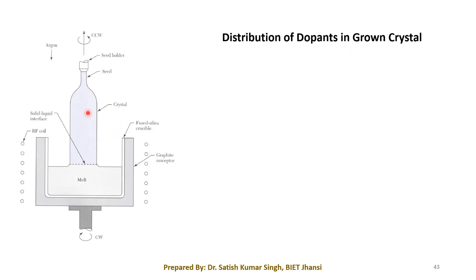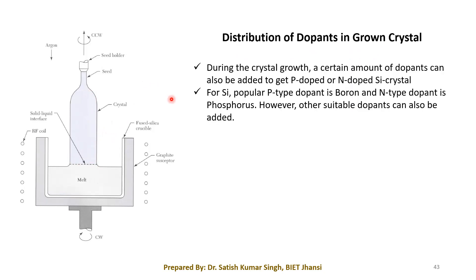There are lots of p-type and n-type dopants, but the most popular material for p-type doping is boron and for n-type doping is phosphorus, in the case of silicon. Other materials can also be used for doping these crystals.